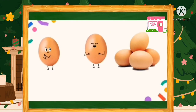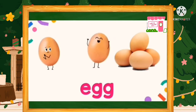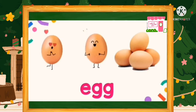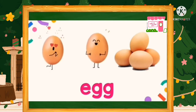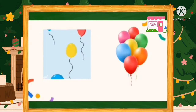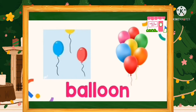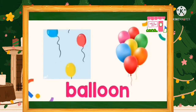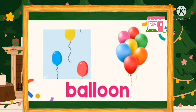What is that, kids? Yes, it's an egg. Everybody say: egg. Look at the egg. What shape is the egg? Great job. The egg is an oval shape. Let's say it together: oval. What is that, kids? Yes, it's a balloon. Balloon. Can you tell me what shape is the balloon? Very good, kids. Balloon is an oval shape. Oval.